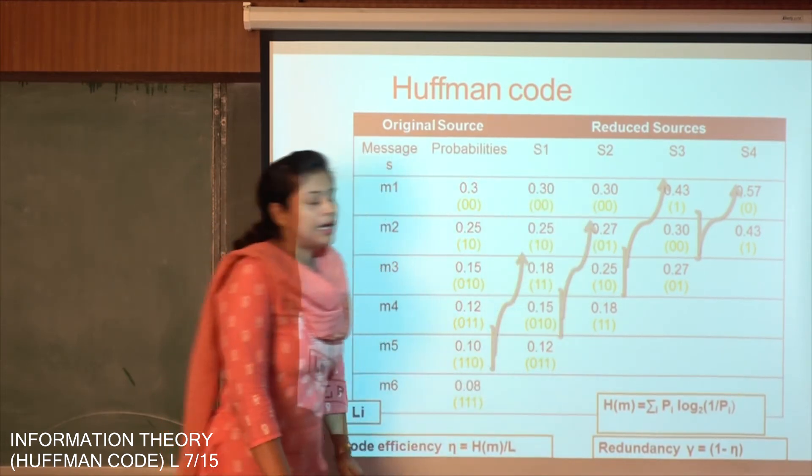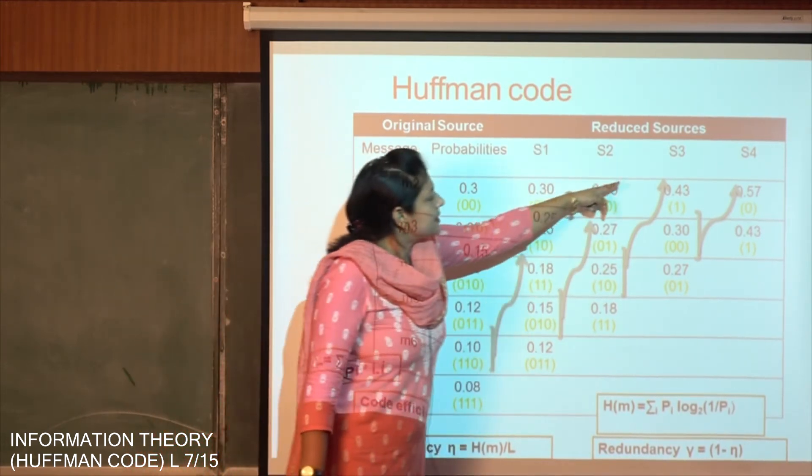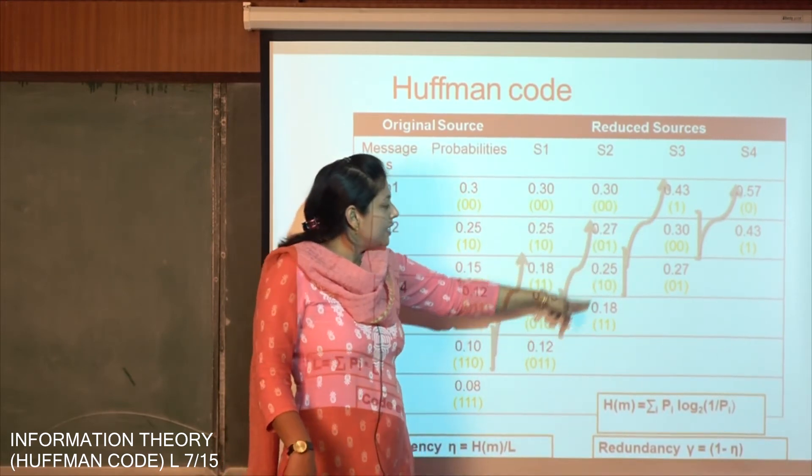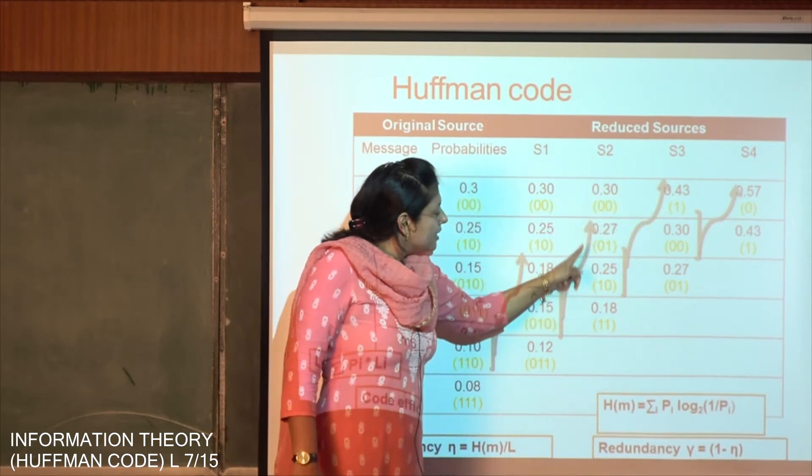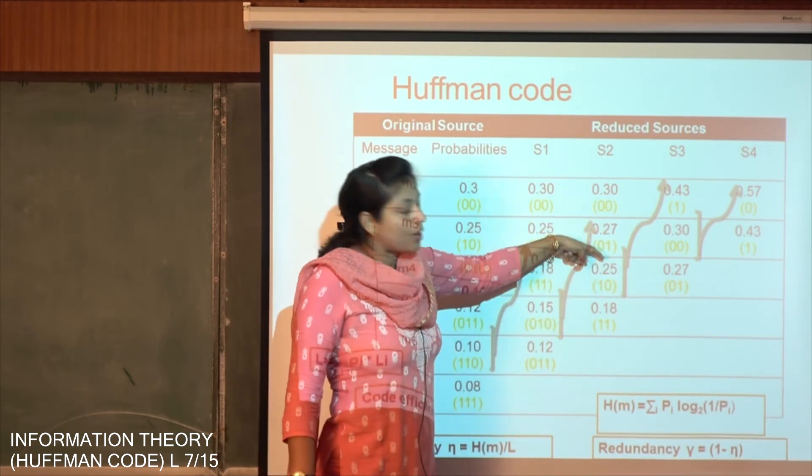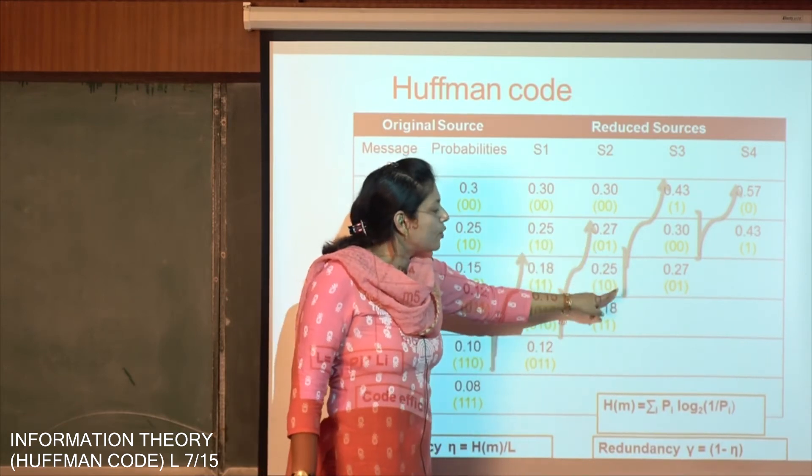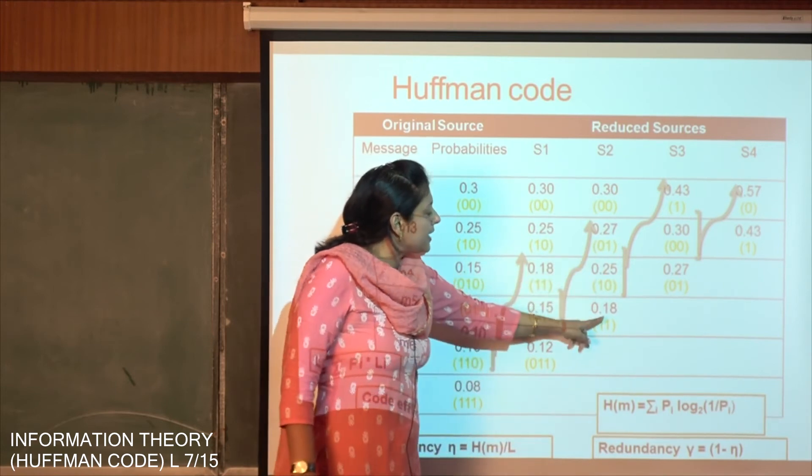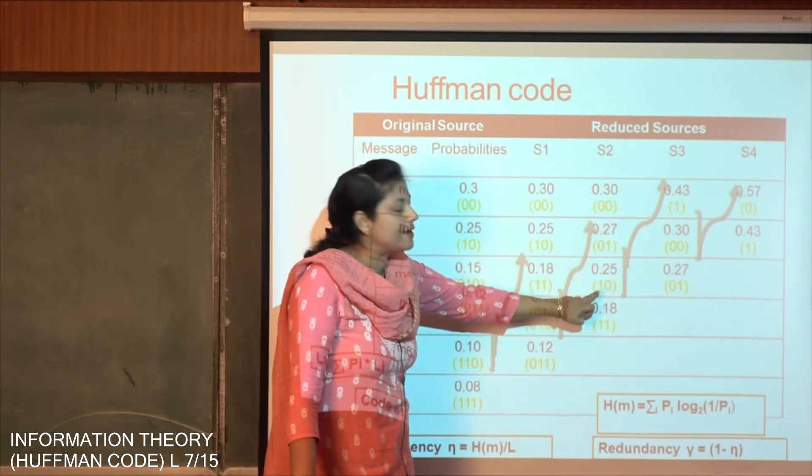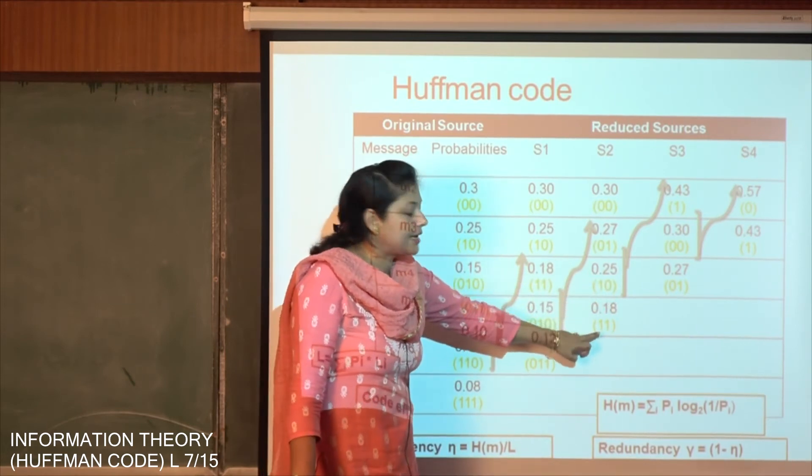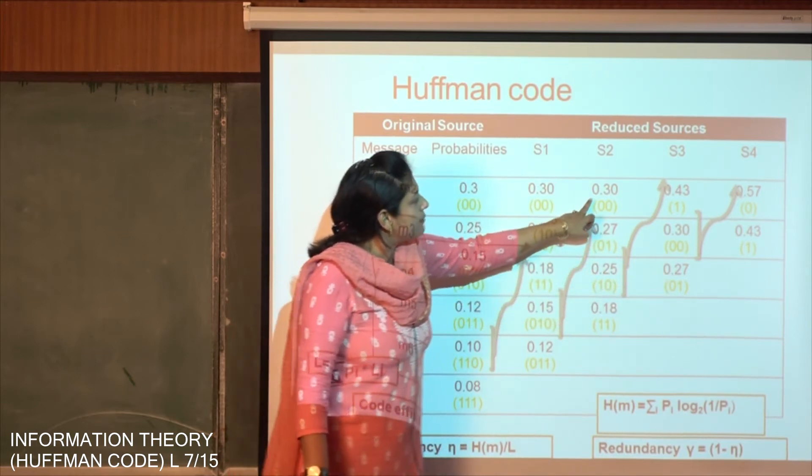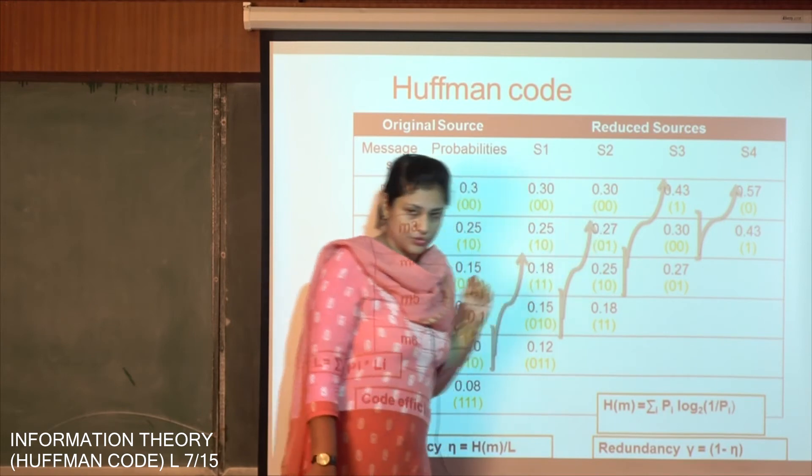Next we go to the S2 reduced state. See here 0.43 has been obtained from 0.25 and 0.18. So we put the value of 1 for 0.25 and 0.18 at the left most digit. And again since 0.25 is above we encode it with 0 in the right hand side and encode 0.18 with 1 in the right hand side. So we are left with 0.25 having 10, 0.18 having 11. And we take the value of 0.27 as 01 and 0.3 we have already found as 00.